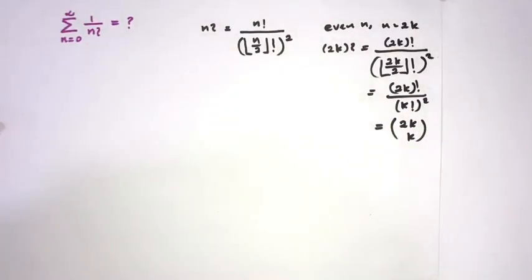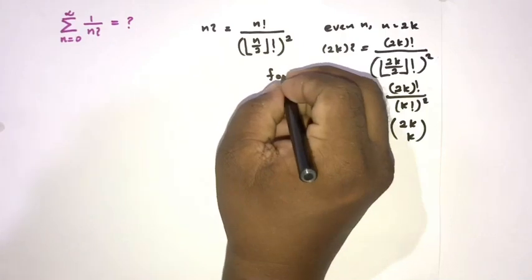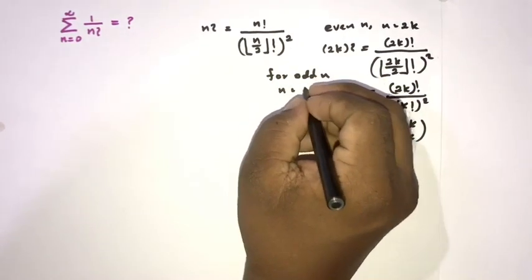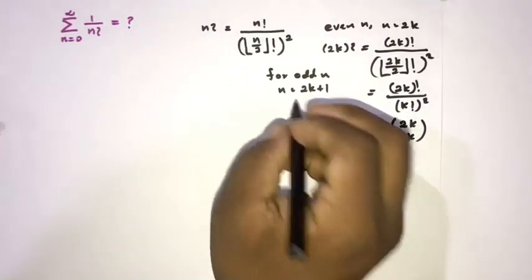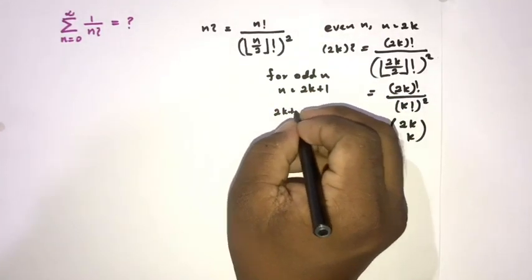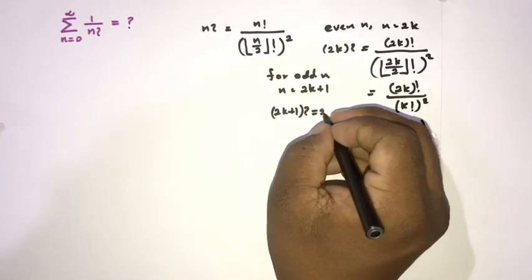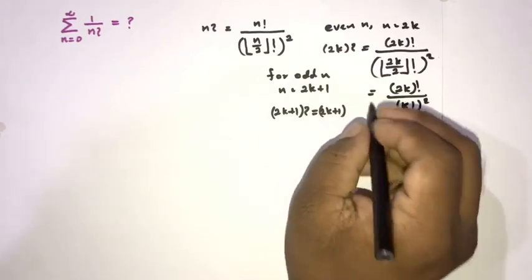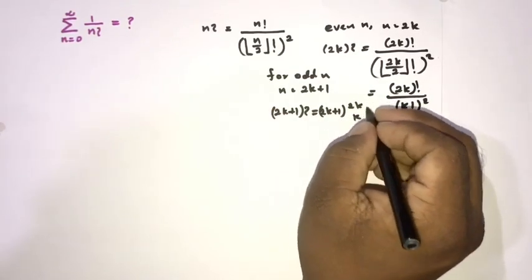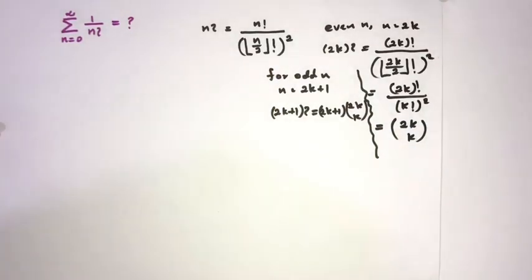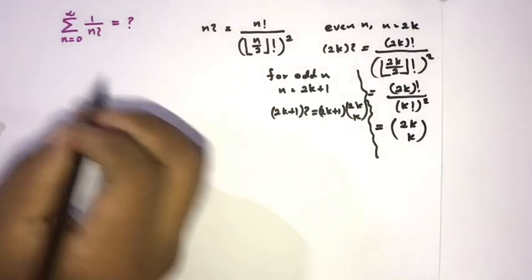Now we should consider the odd case. For odd n, we know n equals 2k plus 1. Similarly, we can write the odd swinging factorial as 2k plus 1 times 2k choose k. Then we can start our question.